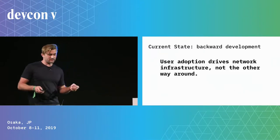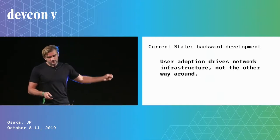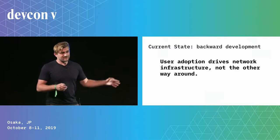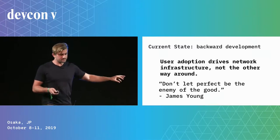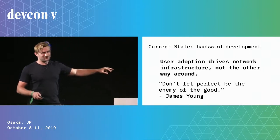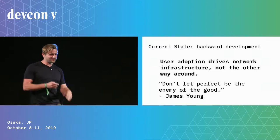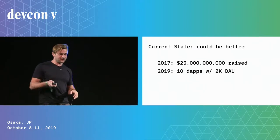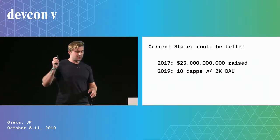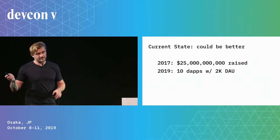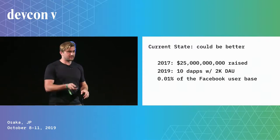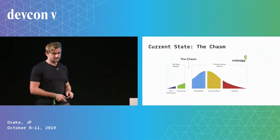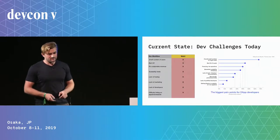I propose that from a narrative perspective we're potentially focused on the back end more than we need to be, because the front end should be driving the back-end solutions. Another quote — 'don't let the perfect be the enemy of the good.' The current state: $25 billion raised since 2017, about 10 dapps with 2,000 users each daily, and again 0.01% of Facebook's user base. Very few have product-market fit, if any. We're well within the chasm.